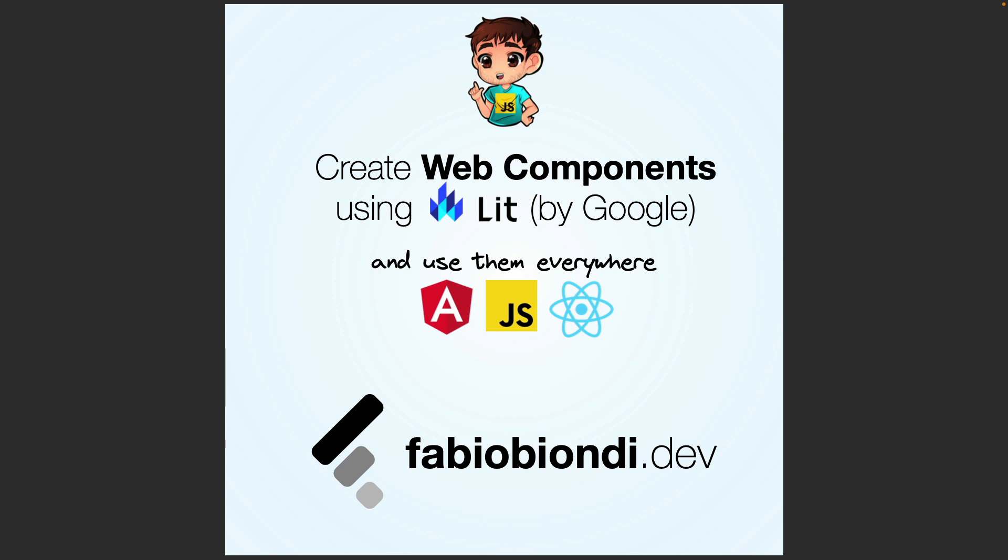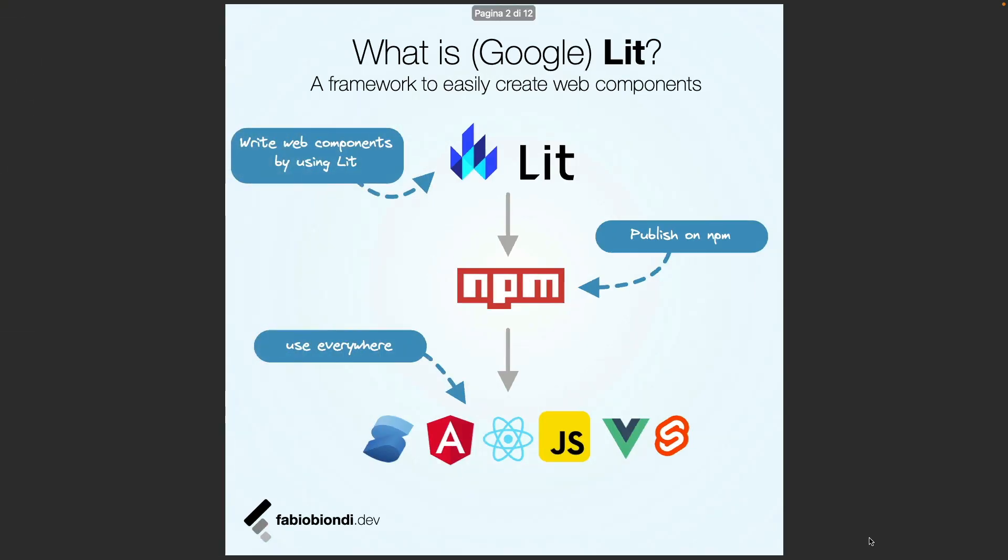However, the native API for creating Web Components is not very pleasant to use. In fact, the developer experience is awful. Frameworks like Google Lit greatly simplify their creation, and in this presentation I will describe how to create Web Components using Lit, publish a Web Component on NPM, and use the Web Component in vanilla JavaScript, Angular, and React projects.